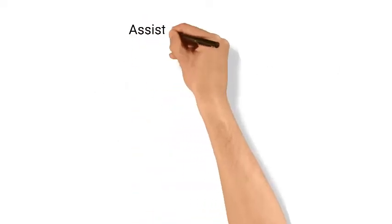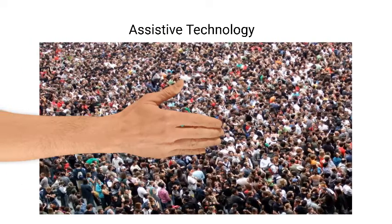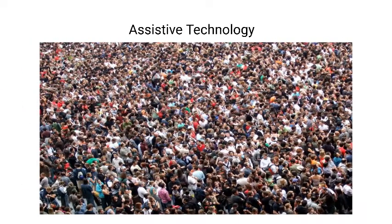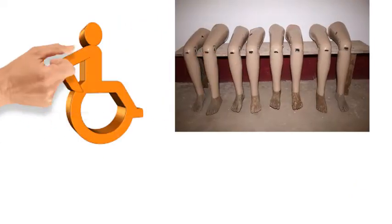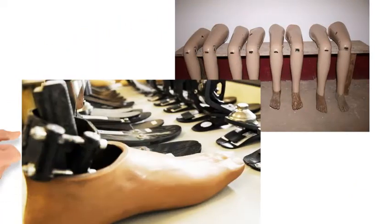The term assistive technology is used very widely and for organisations such as the World Health Organisation includes items like wheelchairs, prosthetics, orthotics, aids and appliances.